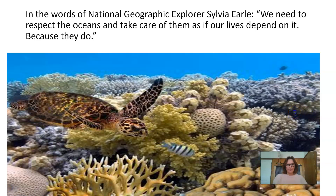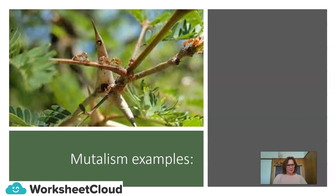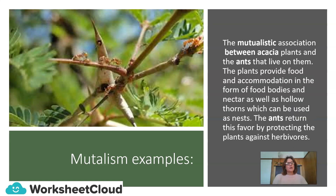Take a look at this beautiful picture. In the words of National Geographic Explorer Sylvia Earle, 'We need to respect the oceans and take care of them as if our lives depend on it, because they do.' Let's look at everyday mutualism examples to recap. Consider the mutualistic relationship between acacia plants and the ants that live on them. The plants provide food and accommodation — food bodies, nectar, and hollow thorns used as nests. The ants return this favour by protecting the plant against herbivores that come and eat them, actually attacking the animals that try to eat the acacia.